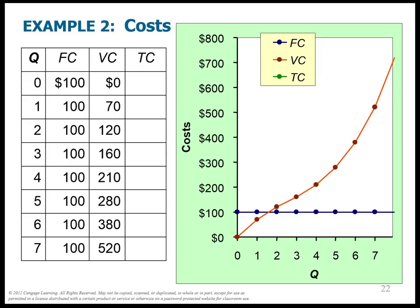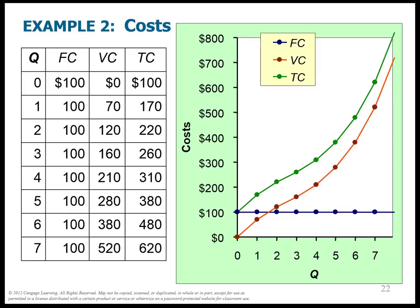Total cost is simply fixed cost plus variable cost, and the graph looks very similar to the variable cost curve, just shifted up by the fixed cost. I want to point out that the vertical distance between the total cost curve and the variable cost curve at any point is the fixed cost divided by the number of units produced. Notice it gets closer together at higher quantities because the fixed cost is spread over more units.